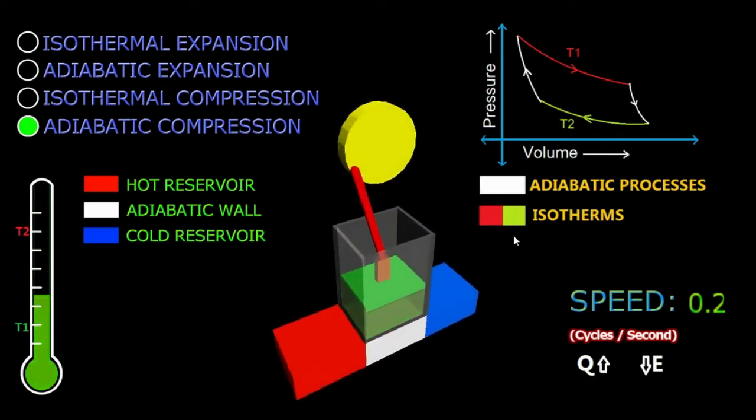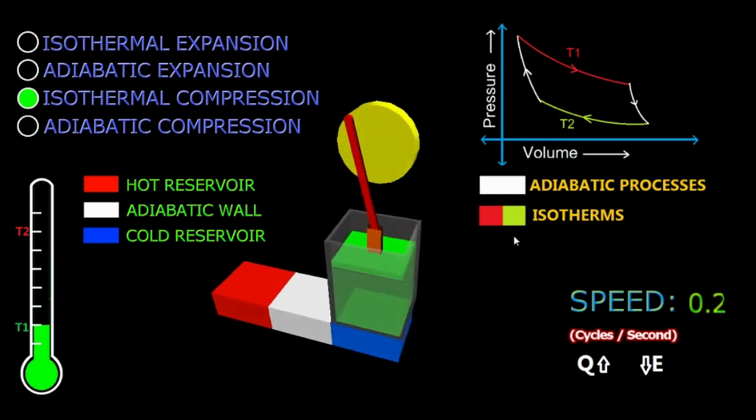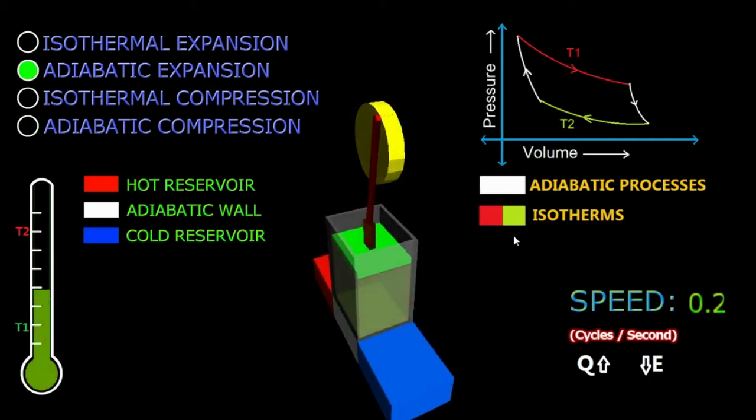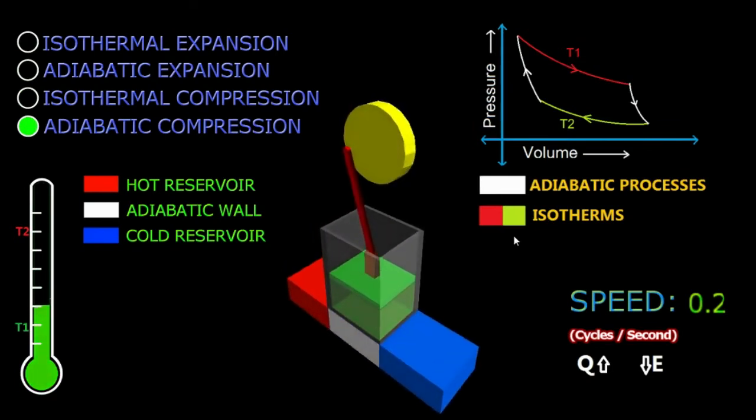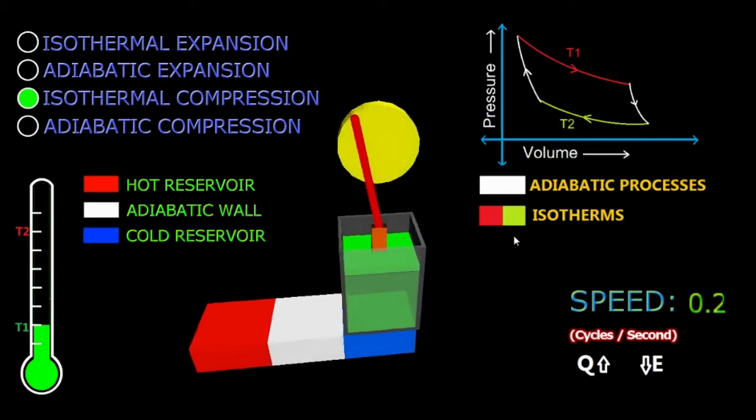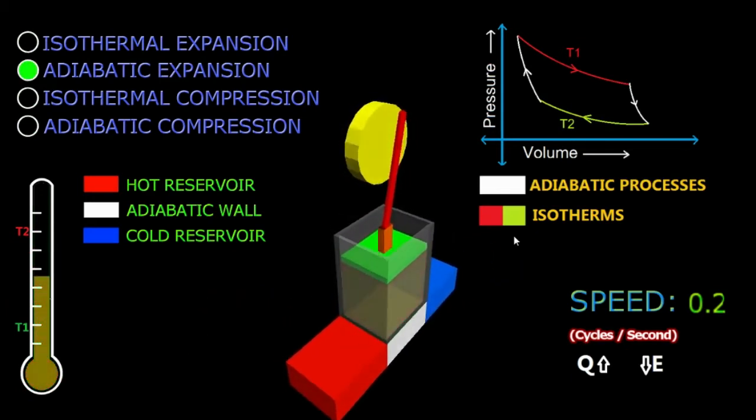Now on the top right corner you can see a simple graph which gives the basic outline of the thermodynamic changes through which the working substance inside the cylinder goes through. This will give you an idea of the pressure and volume of the working substance at any instant.